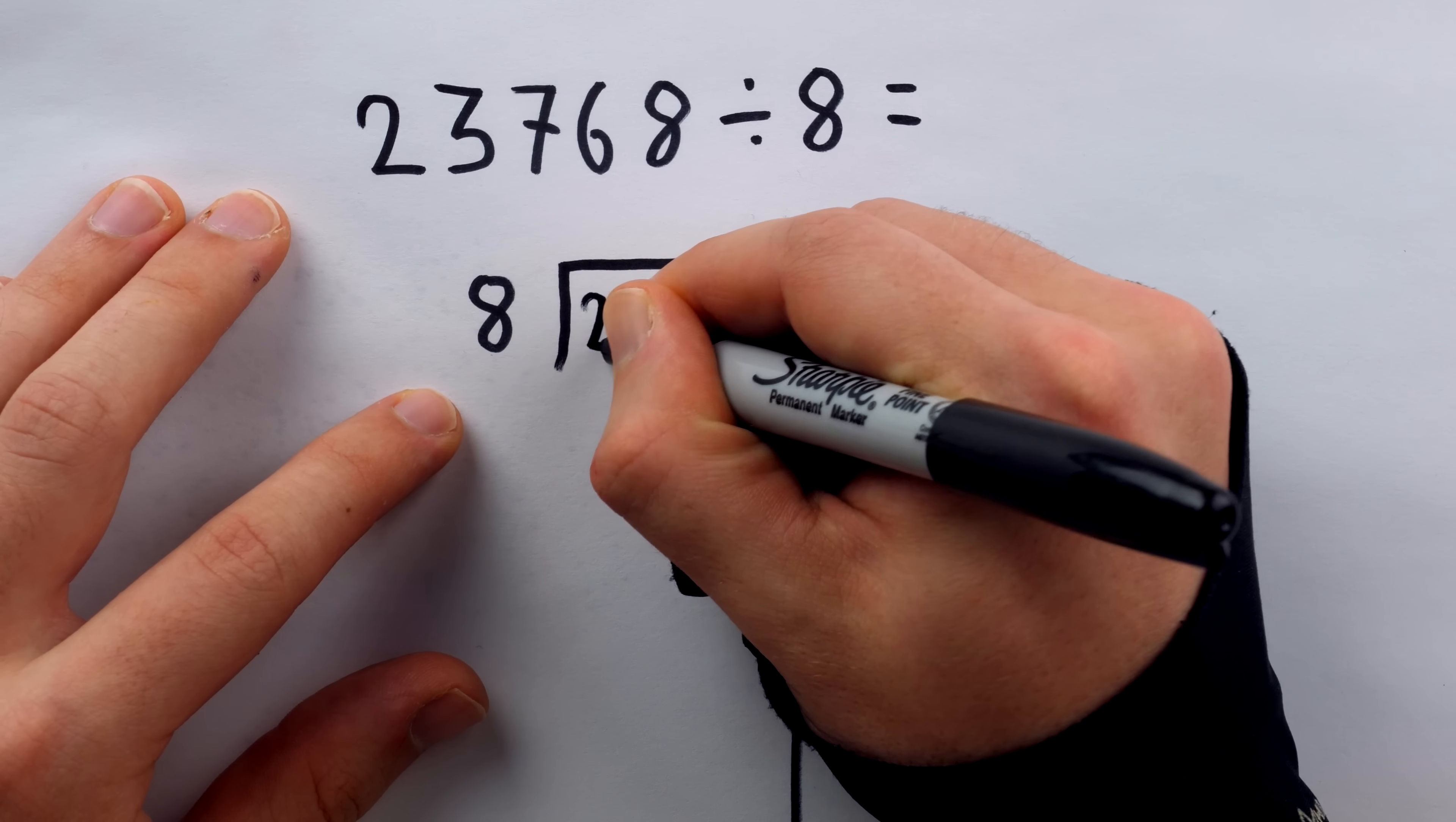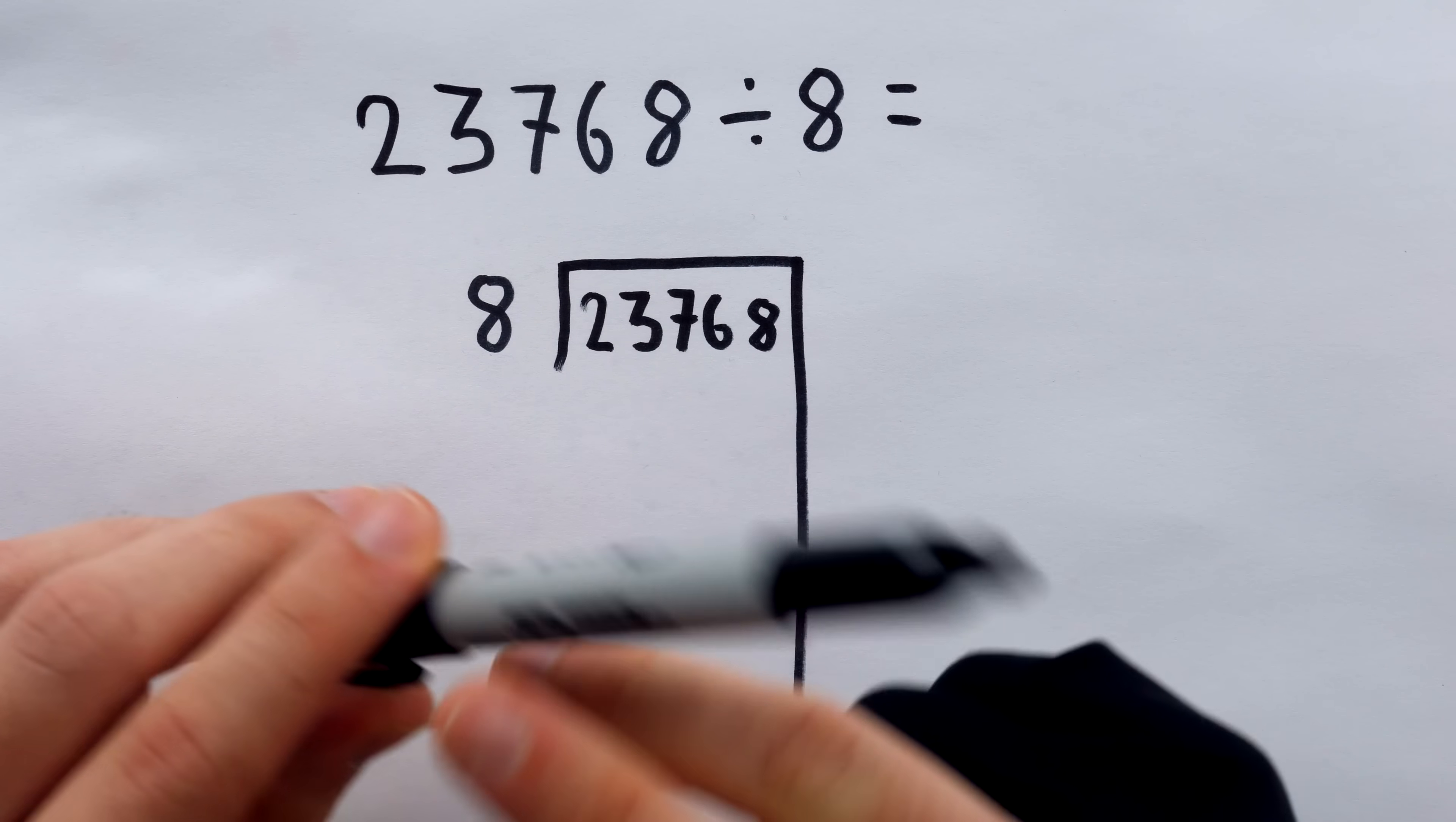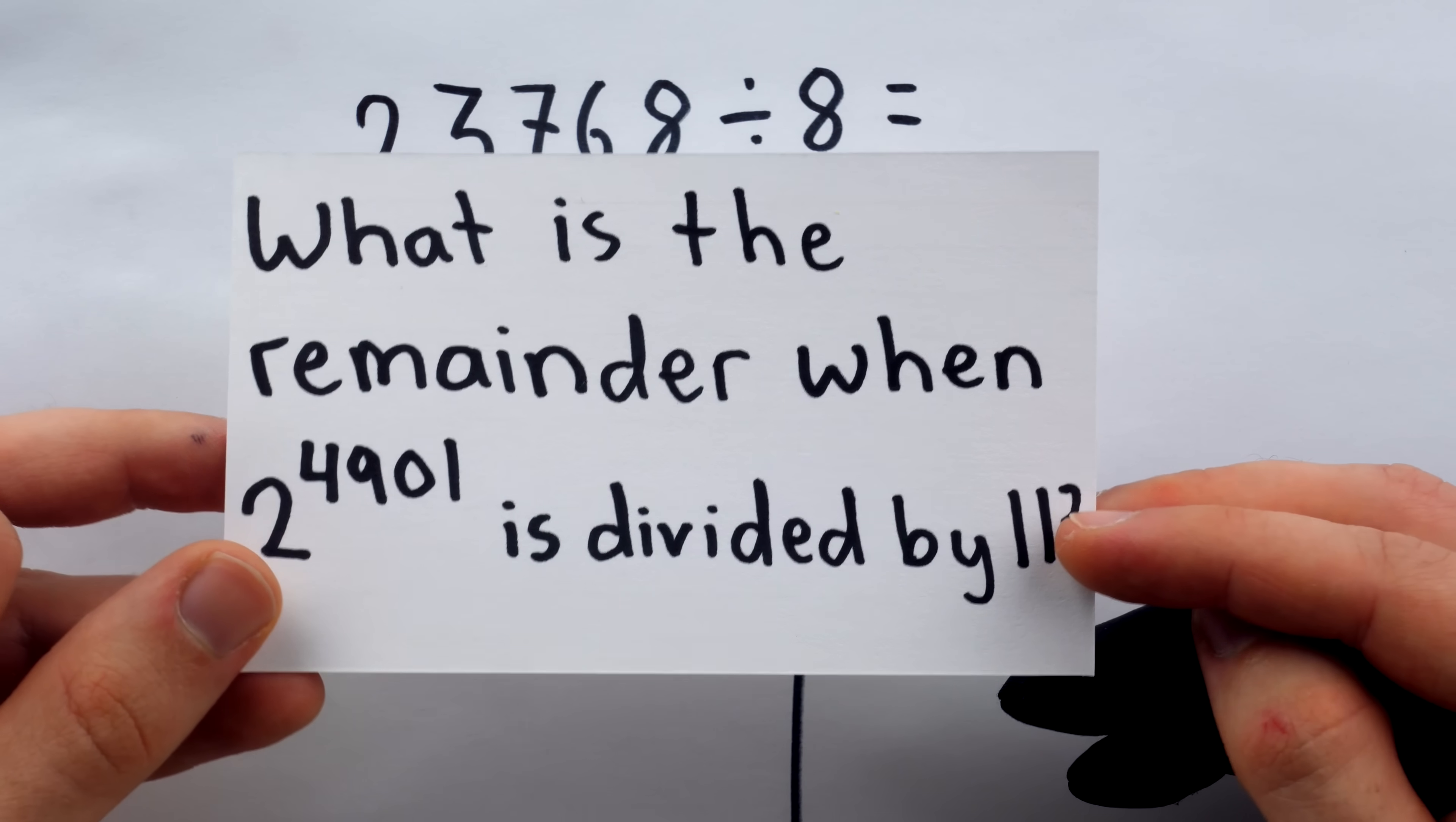I'm going to speed up my process of going through this long division problem, just so you can see how unwieldy long division can be. And then we'll do the same thing, but with short division, and we're not going to speed it up. And then we'll use short division to answer this question. What is the remainder when this massive number, 2 to the power of 4,901, is divided by 11.